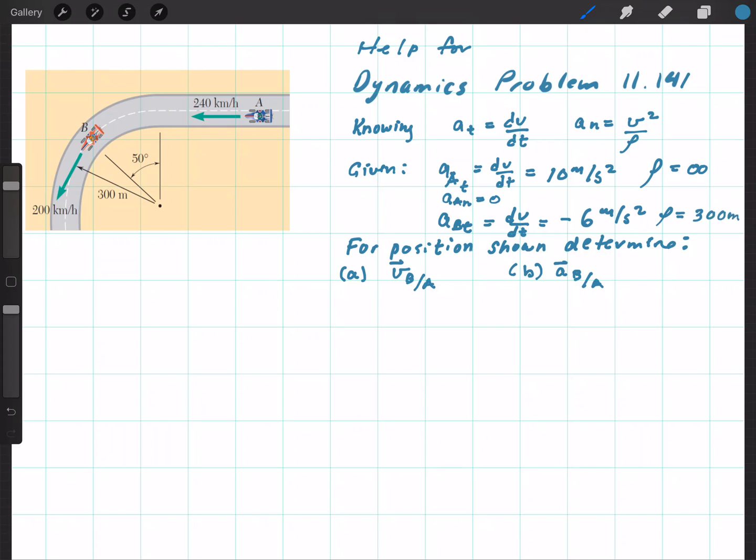So what we want to do here for finding the velocity of B with respect to A is to find the velocity of B as a vector and subtract from it the velocity of A.